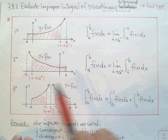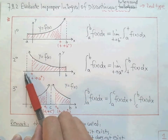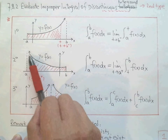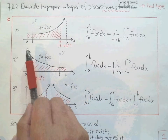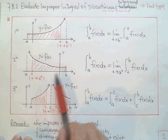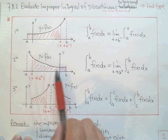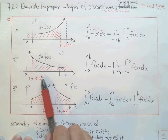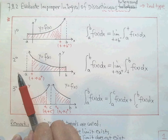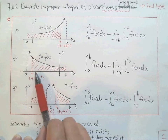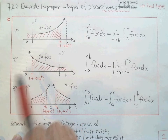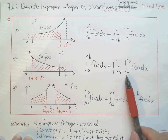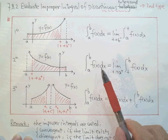So how do we handle that? The function goes to infinity at a. We cut at t, find the area first, then let t approach a from the right. This time it is the right-side limit as t approaches a. That is the definition for this second type of improper integral.